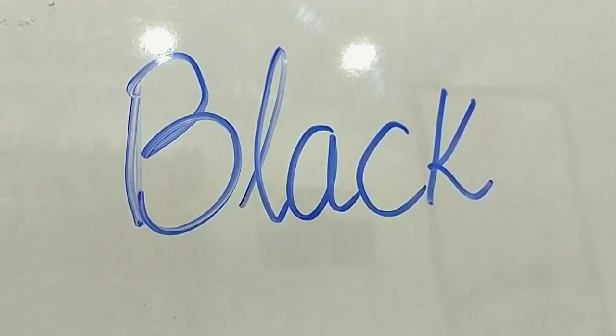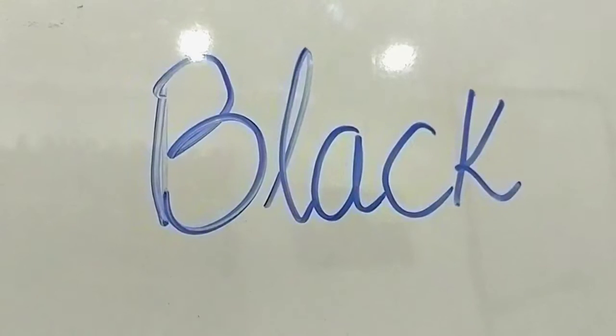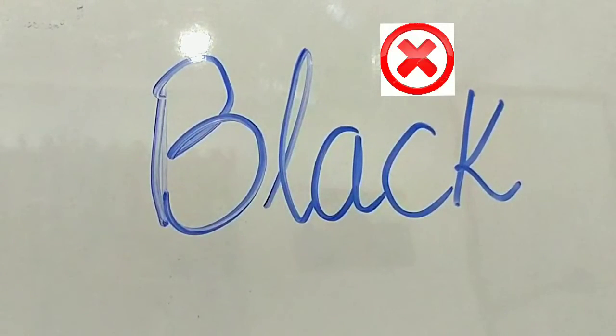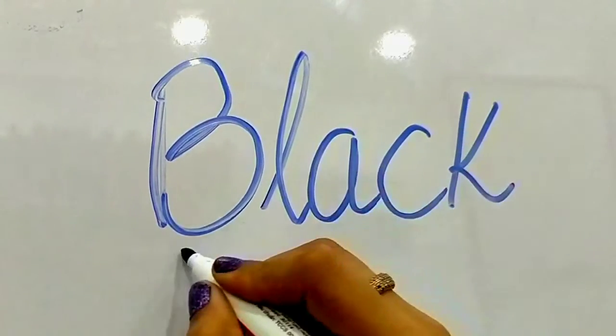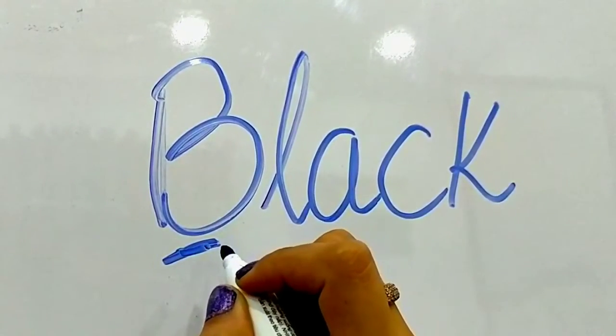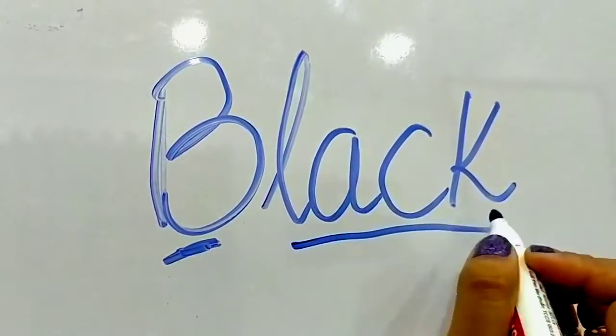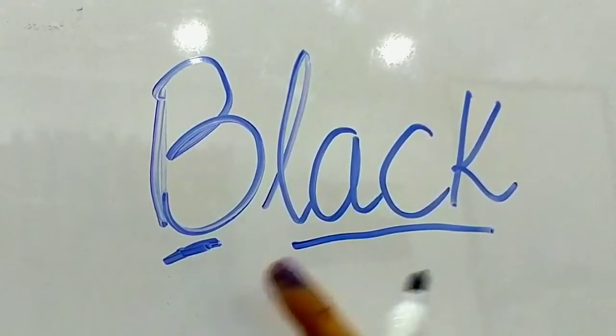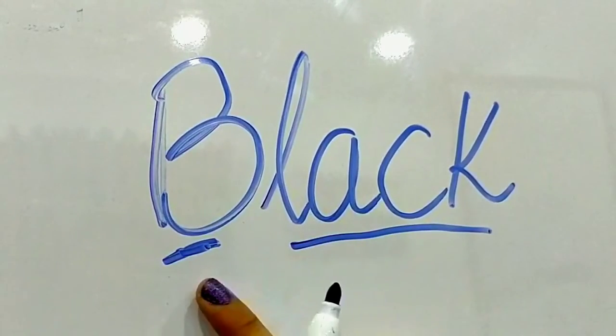Alright, mistake number two. What is this? If you've said black, you're correct. But a lot of people would say black. It is not black. It is black. Everyone with me. Black. How to pronounce it? We'll break it down. This is buh. Everyone with me. Buh. Good. And this is lack. Buh, lack. Together it's going to be black. Wonderful.